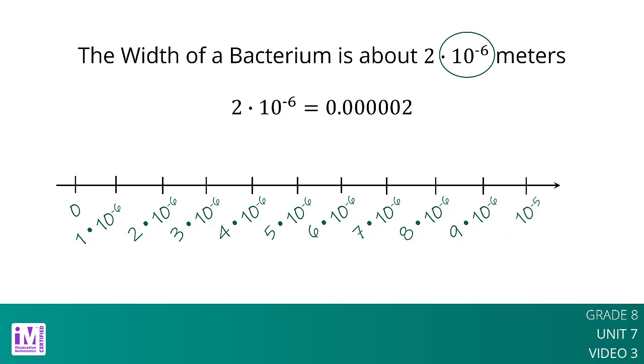The power of 10 on the right side of the number line is always greater than the power on the left. This is true for powers with positive or negative exponents. Now we can plot the location of the width of the bacterium on the number line.